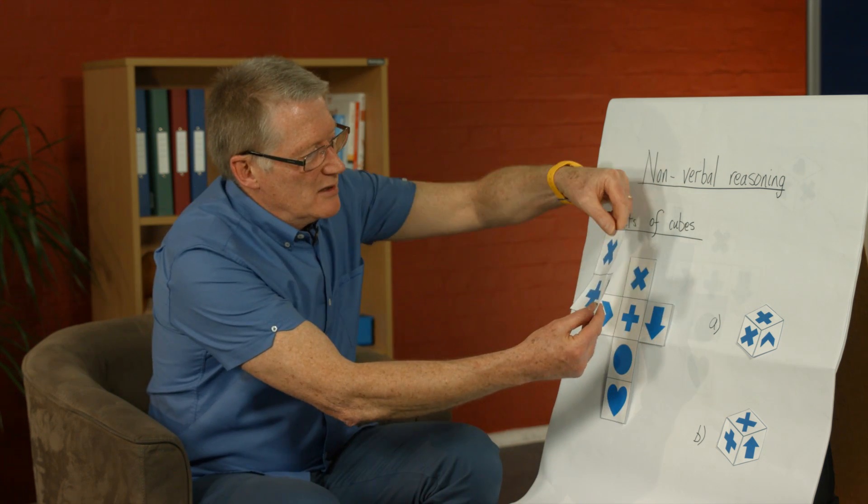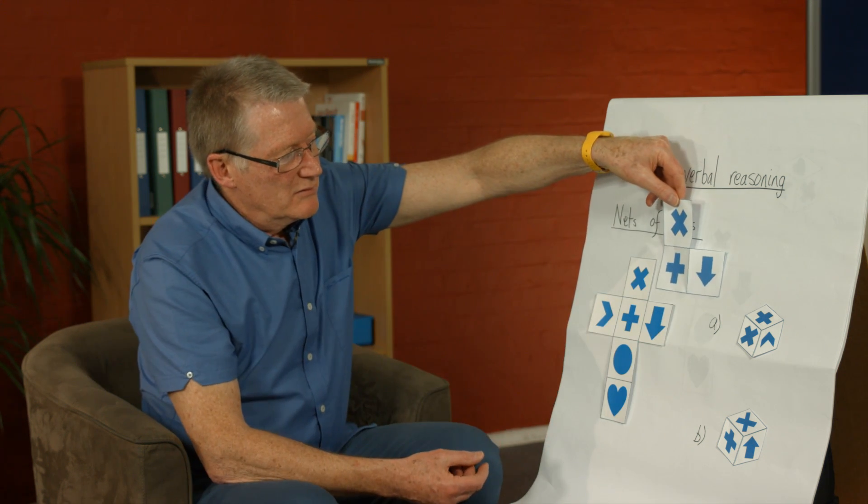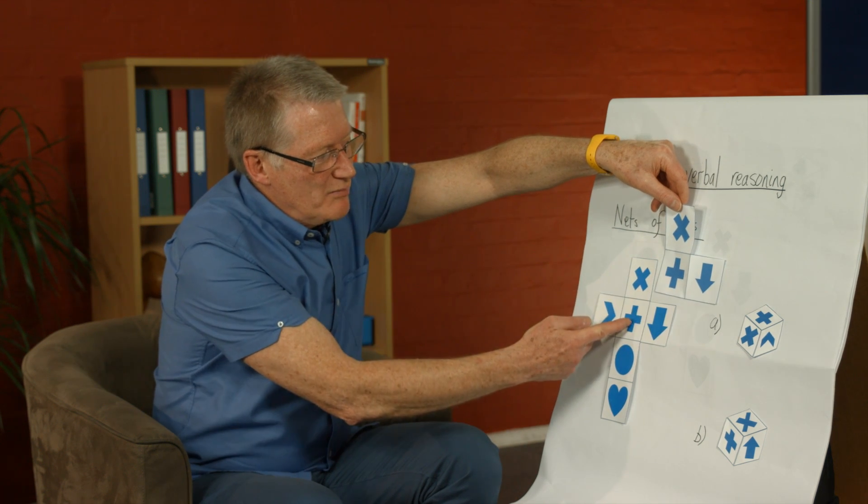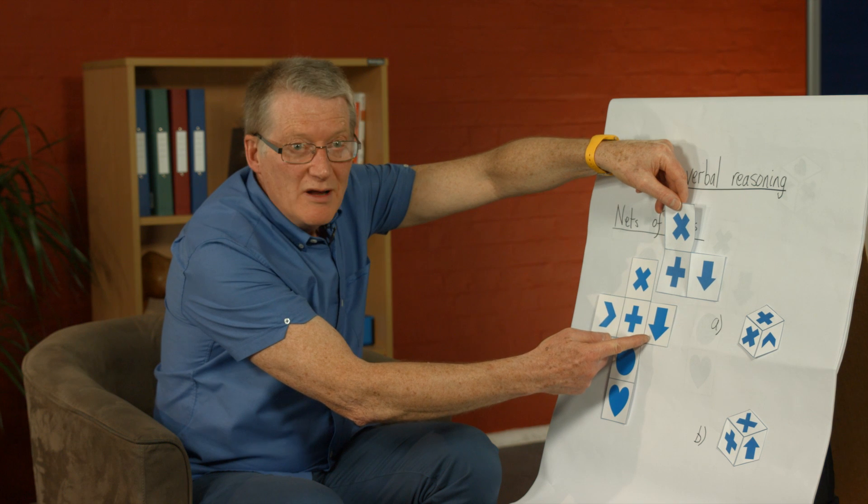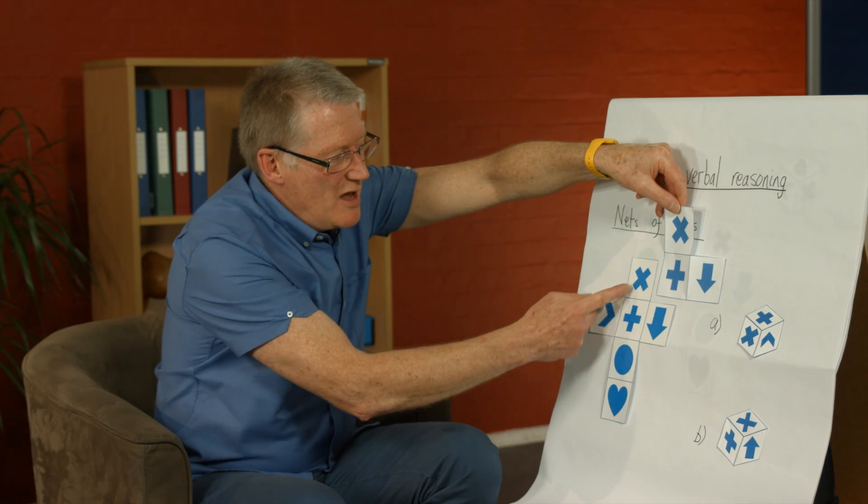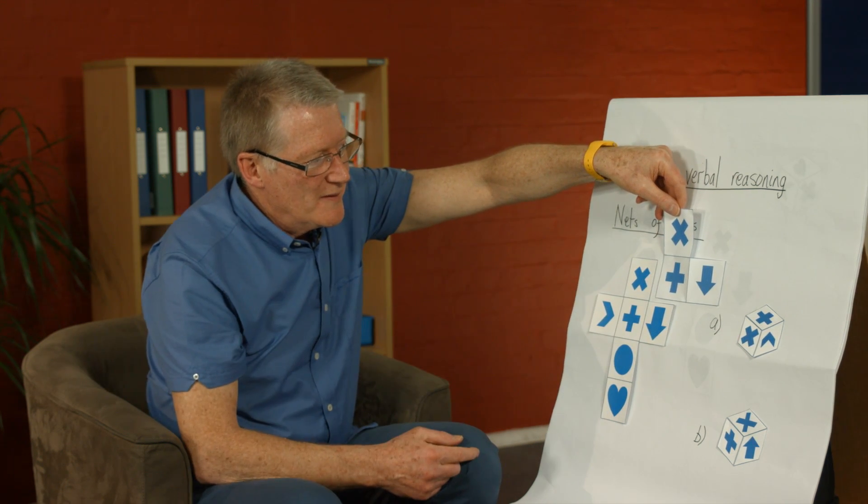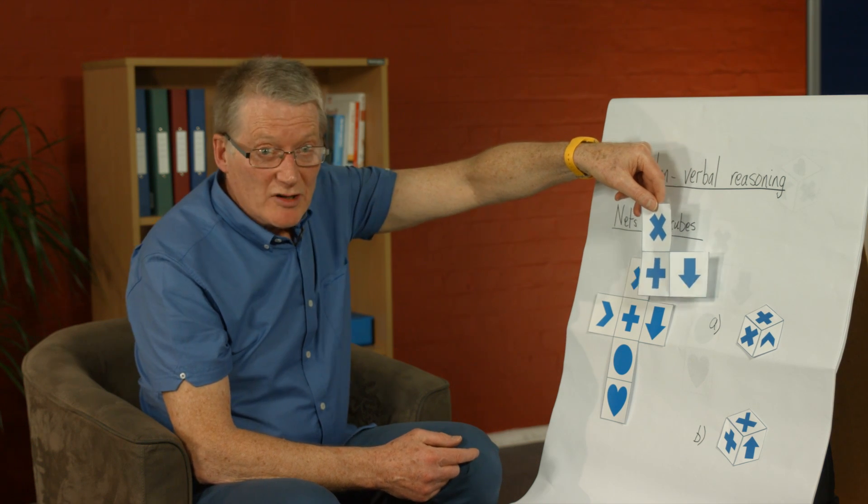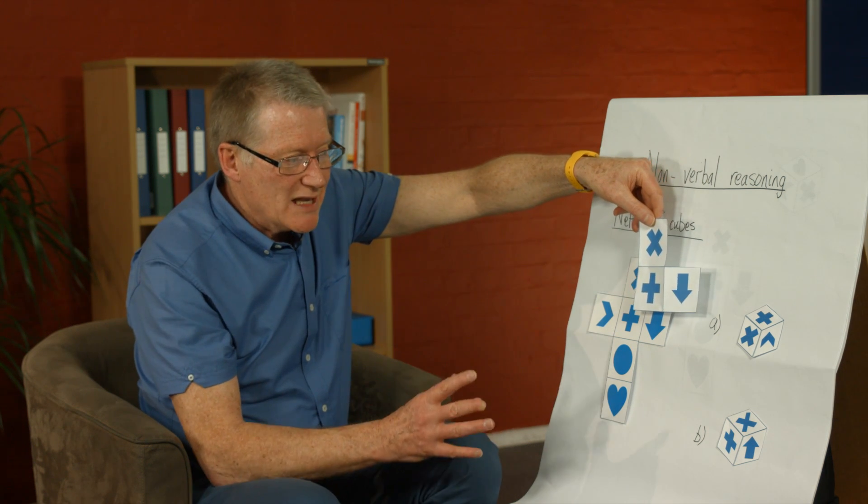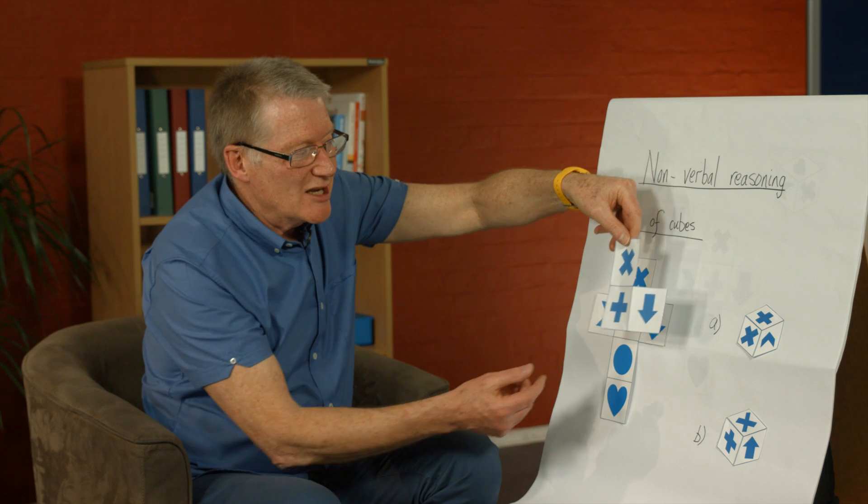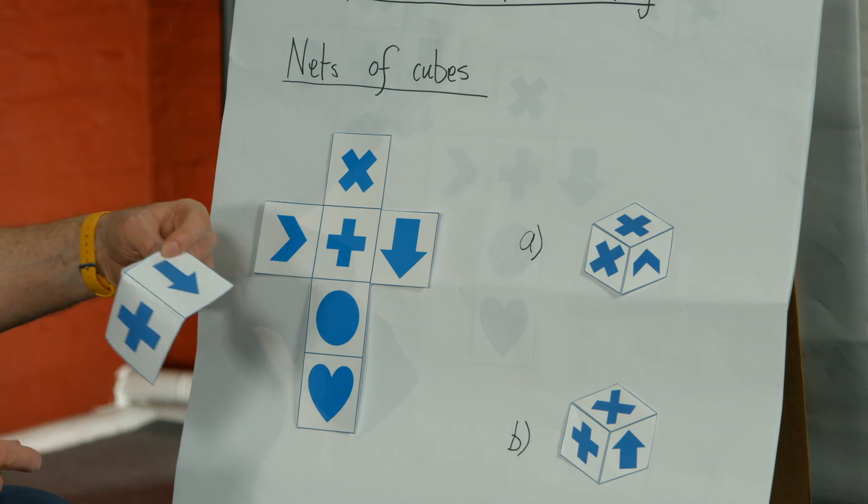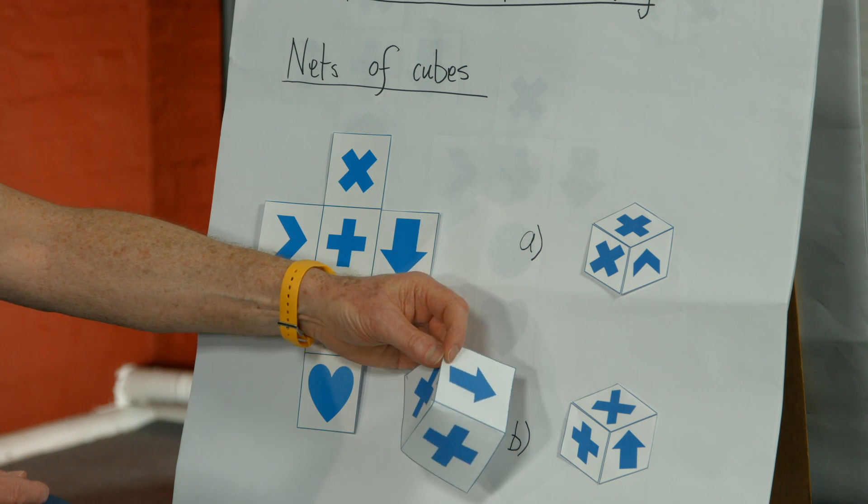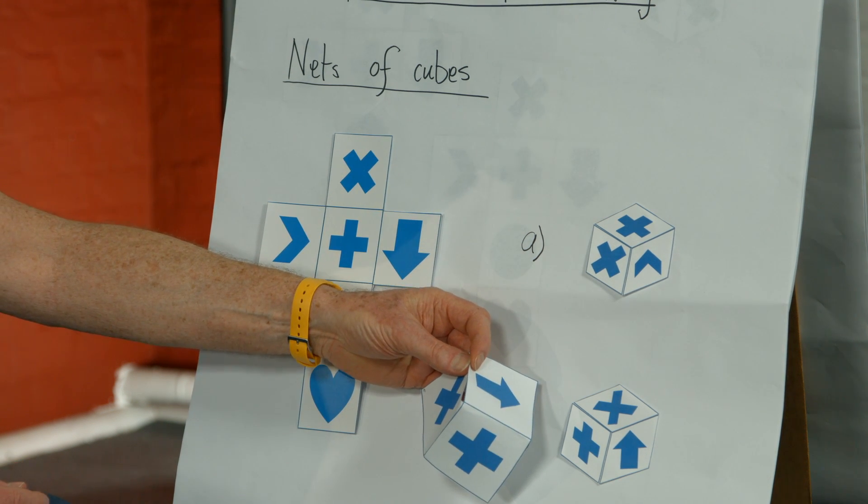And make sure that they come from the net of the cube. So let's look at it up here. OK, we can see we've got the plus sign in the middle, the arrow pointing down and the multiply sign above the plus sign. OK, I'm now going to fold this one up to make it look like the 3D representation. And see if that's the same as what we've got on the cube.